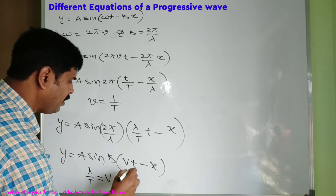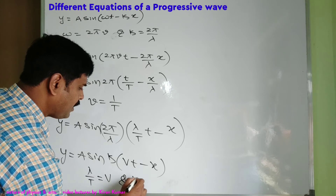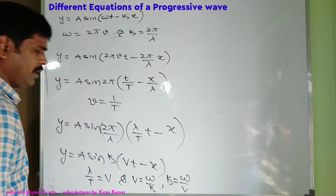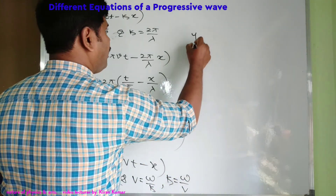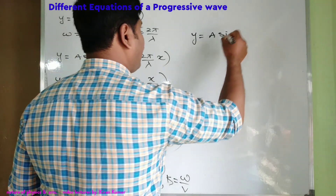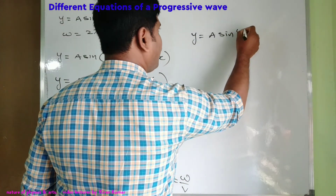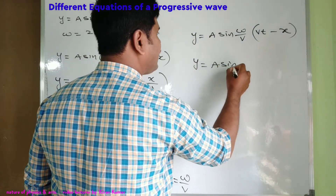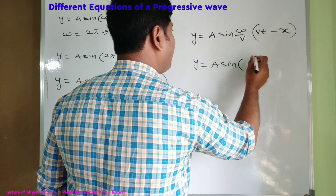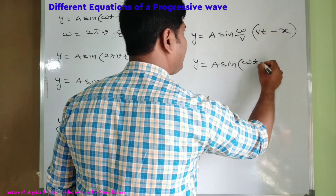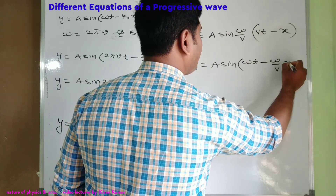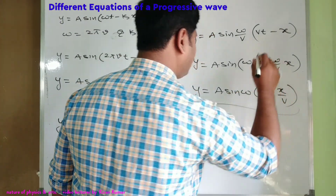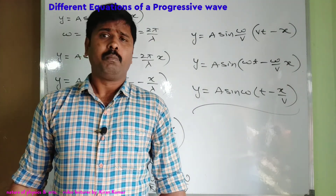Here λ/T equals the velocity of the wave v. Also, v equals ω/k and k equals ω/v. Replacing k in the equation: y equals a sin((ω/v)(vt − x)), which expands to y equals a sin(ωt − (ω/v)x). Otherwise we can write y equals a sin(ω(t − x/v)). These are the different equivalent equations for the progressive wave.